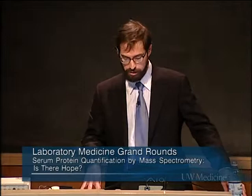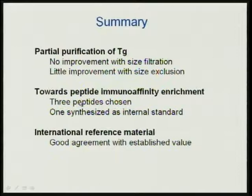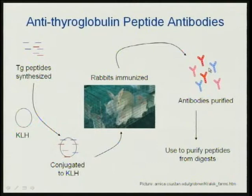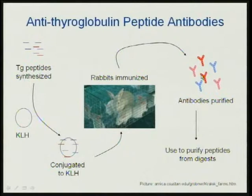To summarize this part: we hope to use mass spectrometry to solve many of the problems we have with immunoassays. We didn't get much of a bonus from size filtration or size exclusion. We now have three peptides to inject into rabbits to make anti-peptide antibodies, we synthesized one as an internal standard, and using that we showed good agreement with the established value in the reference material. Let's try to make some anti-thyroglobulin peptide antibodies. To do that, we took the peptides, stuck them to keyhole limpet hemocyanin (KLH), injected the peptides conjugated to KLH into rabbits, and the rabbits made a nice immune response to two of those three peptides. We then used a solid phase to purify the antibodies.